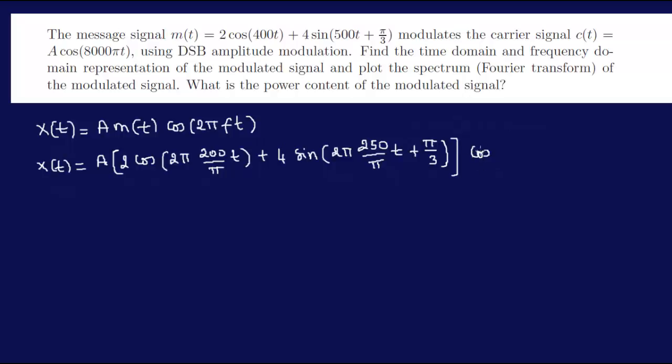Over here we have 8000πT. We can rewrite that by taking out a 2π, so we have 2π times 4000T.